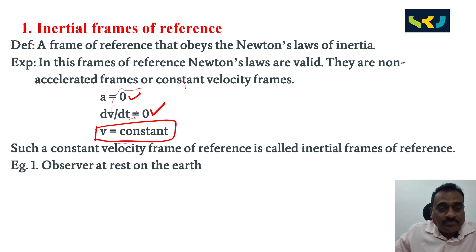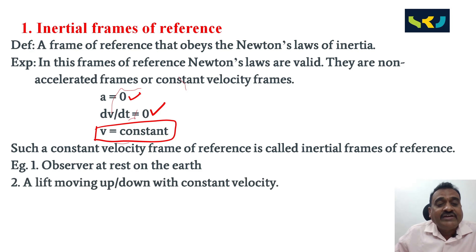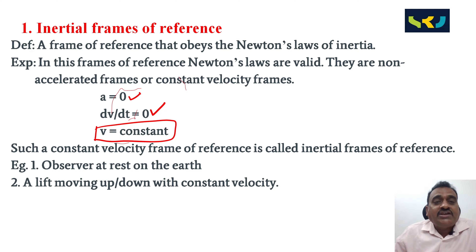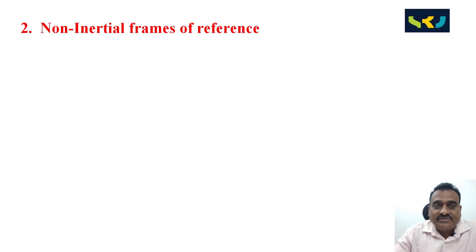Examples: observer at rest on the Earth; second, a lift moving up and down with constant velocity. A frame of reference that obeys Newton's laws of inertia is called an inertial frame of reference.